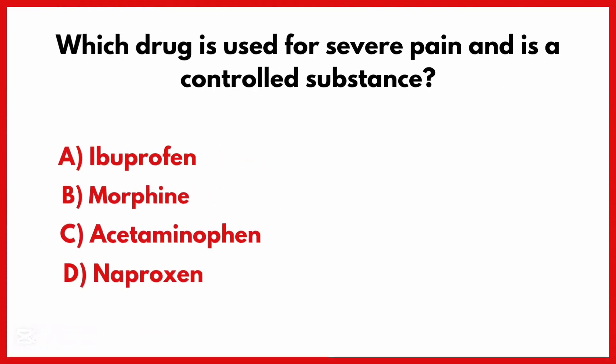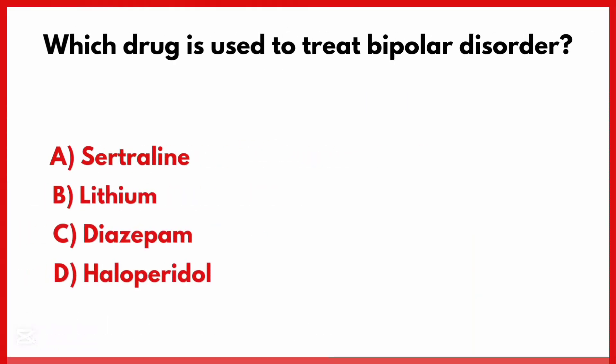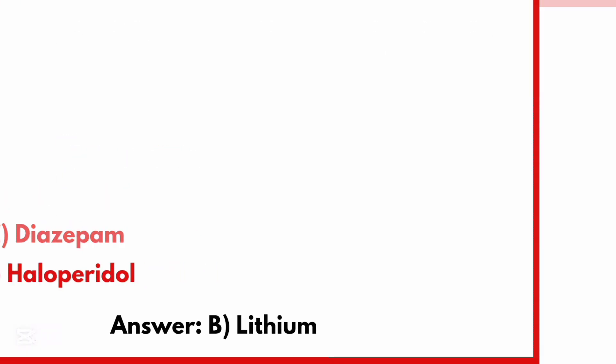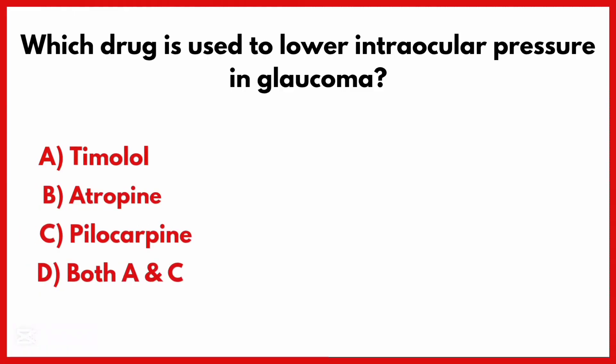Which drug is used to lower intraocular pressure in glaucoma? Correct answer is option D. Both A and C.